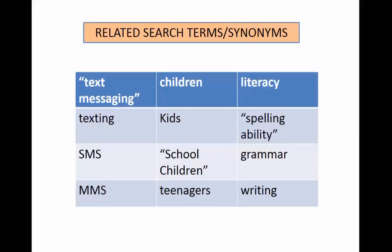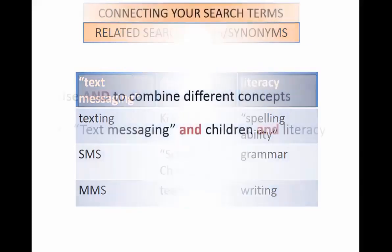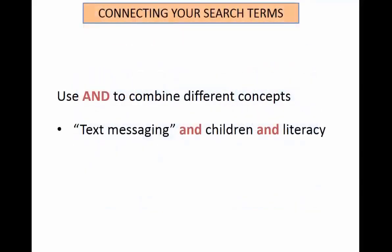It is important to also understand how these terms connect to one another. To ensure that our three key concepts — text messaging, children, and literacy — all show up in our results, we want to combine them using AND. This tells the database that all of these keywords must be present in an item for it to show up in our results. In this case, the results must include text messaging AND children AND literacy.